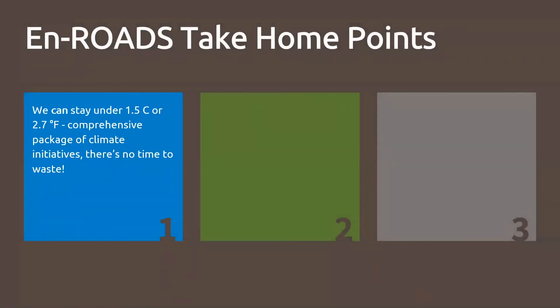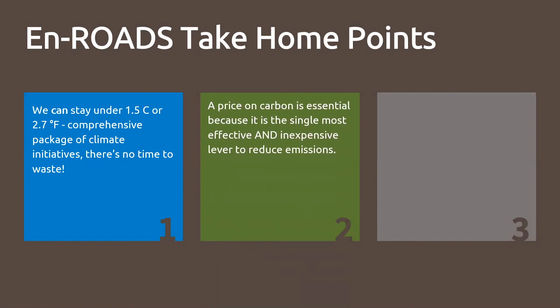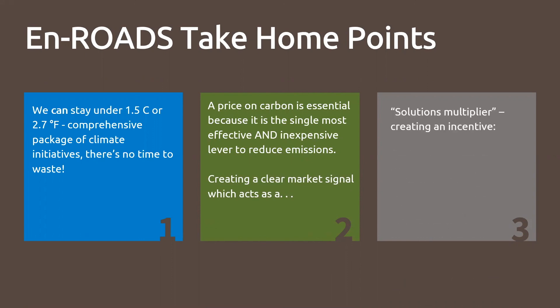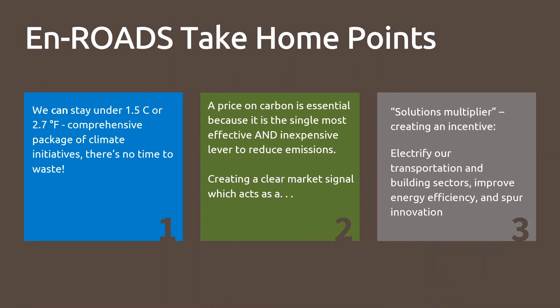So our take-home points are this: we can in fact stay under 2.7 degrees average global temperature, but it's going to take a comprehensive package of climate initiatives. There's clearly no time to waste. A price on carbon is absolutely essential — it is clearly the single most effective and inexpensive lever to reduce emissions, using market forces to create clear price signals that spur innovation and act as a solutions multiplier to incentivize electrifying our transportation and building sectors, improve energy efficiency, and spur innovation like carbon capture and sequestration.